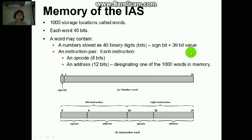Memory of IAS: the capacity of memory is accessed in terms of words. There are a total of 1000 storage locations in IAS, meaning 1000 words. For each word there are 40 bits, and you can use those 40 bits for either storing an instruction or a number. If you store a number, the first bit will contain the sign bit — either positive or negative — and the rest of 39 bits store the value. If you are storing an instruction, it has two parts: opcode and address.